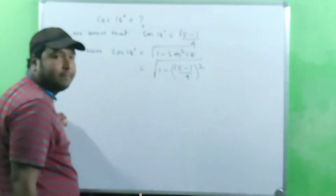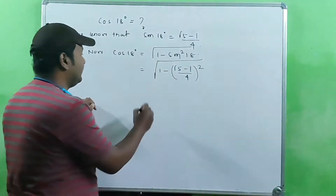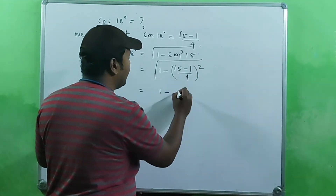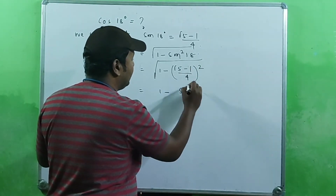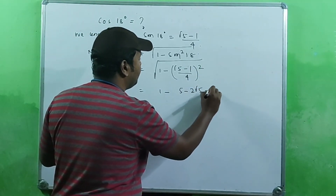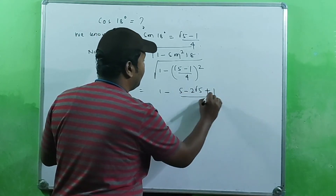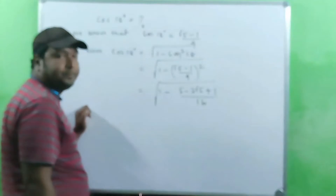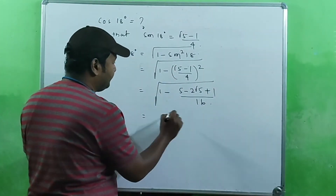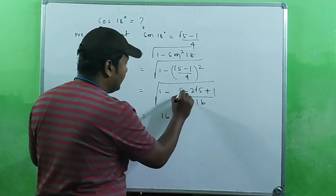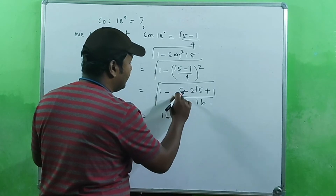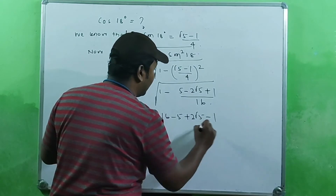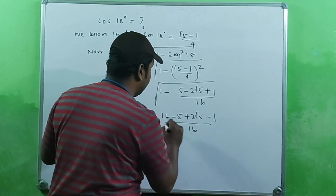Expanding the square: (√5 − 1)² = 5 − 2√5 + 1. So we have √(1 − (5 − 2√5 + 1)/16). Taking a common denominator of 16, this becomes √((16 − 5 + 2√5 − 1) / 16).